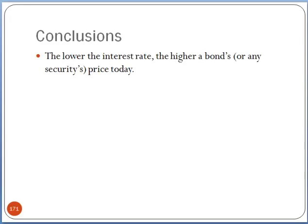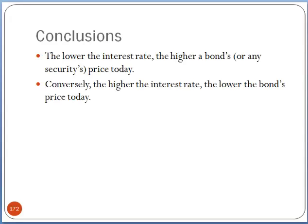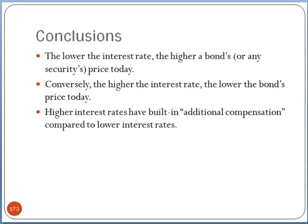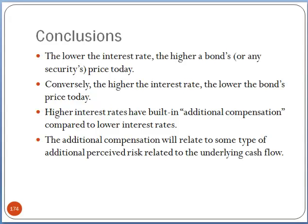Some conclusions on bonds and interest rates. The lower the interest rate or discount rate, the higher a bond's — or really any security's — price today. We saw that from the time value of money. Conversely, the higher the interest rate, the lower the bond price. They move in opposite directions. High interest rates have built-in additional compensation compared to lower interest rates, and that additional compensation relates to some type of additional perceived risk related to the underlying cash flow.